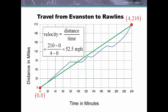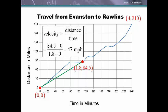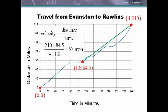That slope gives the average for the whole trip from Evanston to Rollins. But maybe we're interested in just the average from Evanston to when we left Green River. We draw a secant line joining those two points and compute the slope — y₂ minus y₁ over x₂ minus x₁ — and for that segment we averaged 47 miles per hour. Doing the same from when we left Green River to Rollins, the slope of that secant line gives 57 miles per hour. Each of these is still an average velocity.